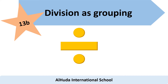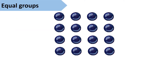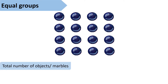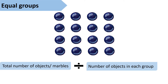Assalamu alaikum. We're going to learn about division as grouping. Here I have some marbles. We are going to divide the total number of marbles by the total number of marbles in each group. We use this formula when we have to find out how many groups we have — when we don't know the number of groups but we know how many there are in each group.